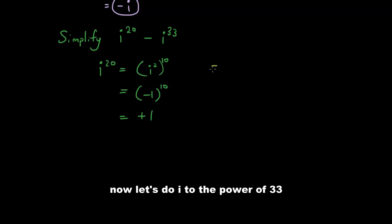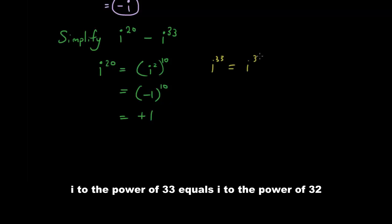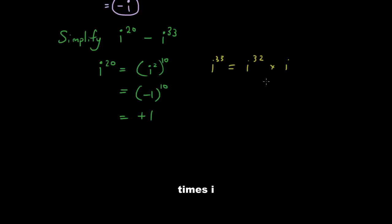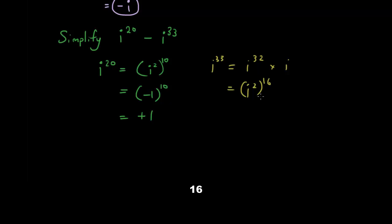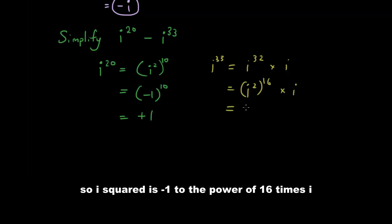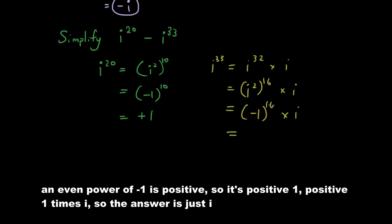Now let's do i to the power of 33. i to the power of 33 equals i to the power of 32 times i. And i to the power of 32 is i squared to the power of 16, since 2 times 16 is 32. So we have negative 1 to the power of 16 times i. Since 16 is an even power, negative 1 to an even power is positive 1. So it's positive 1 times i, which means the answer is just i.